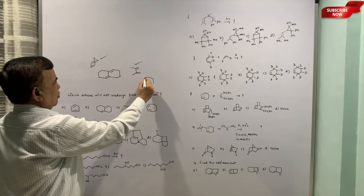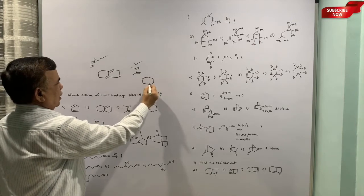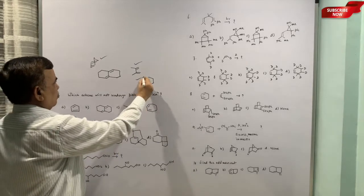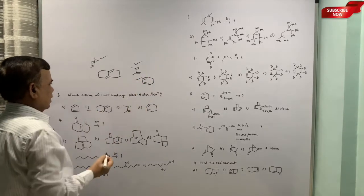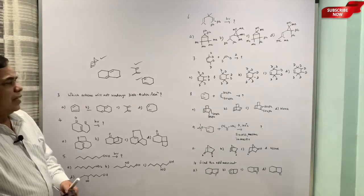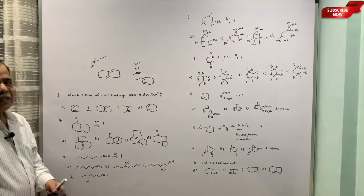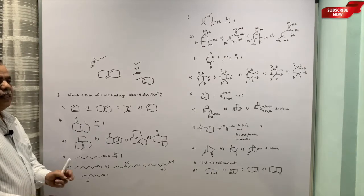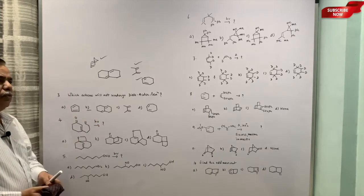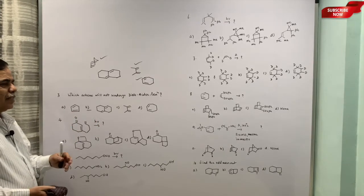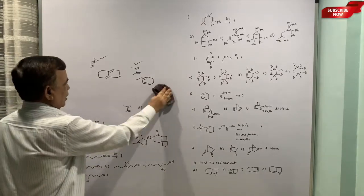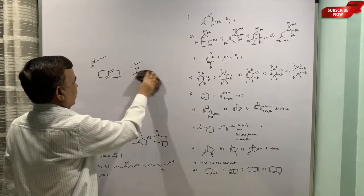Because we can't have cis-trans isomerism here because of the rigid system. This is very much reactive and the other one is also, although there is a seven-membered ring, this can also react. So all these will react but this will not undergo Diels-Alder because of the rigidity and this has got trans geometry. Generally the dienes which are s-cis will undergo Diels-Alder readily.